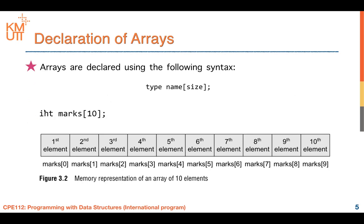When you declare an array in C, you start with the data type — in this case, integer — then the name of the array, which is 'marks', and then the number 10 in brackets, referring to the number of elements. This allocates contiguous memory for elements zero through nine. To access the first element you write marks[0], the second is marks[1], and so on.